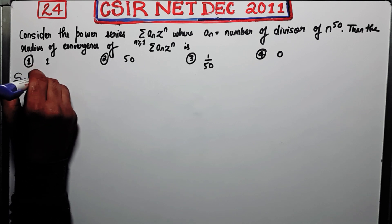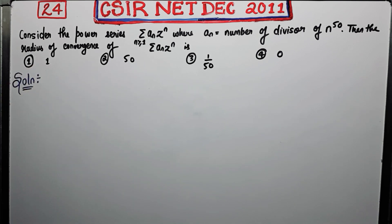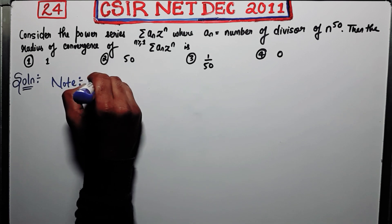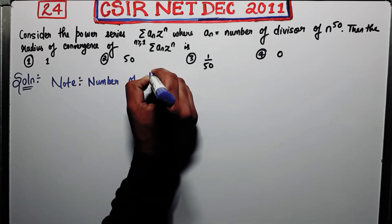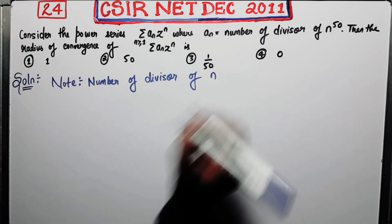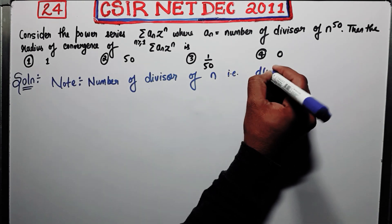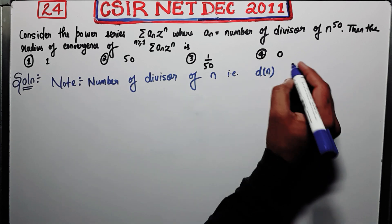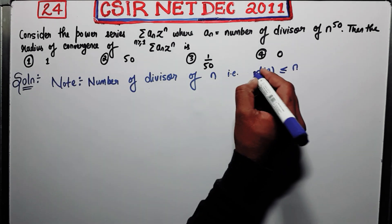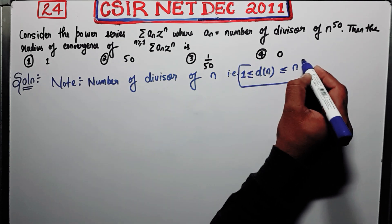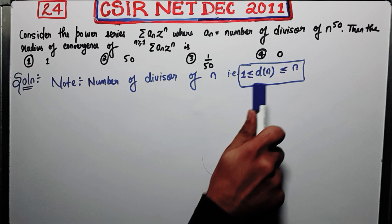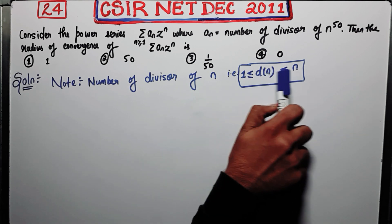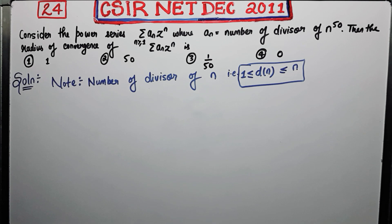This is a very easy question. The only thing required is one key note: the number of divisors of n — denoted d(n) or tau(n) — is always less than or equal to n. This inequality is very obvious but very important for this question. Unless you work with this inequality, you are not going to figure out this problem.